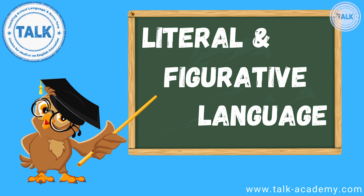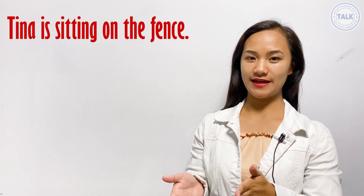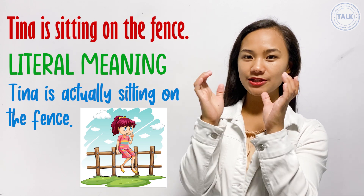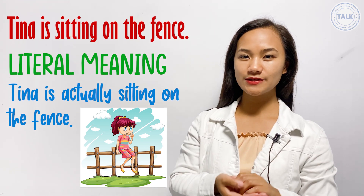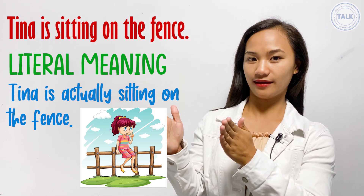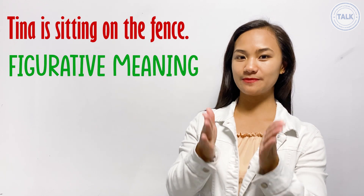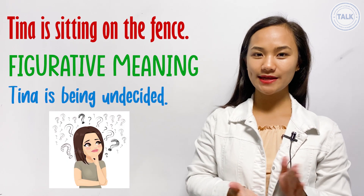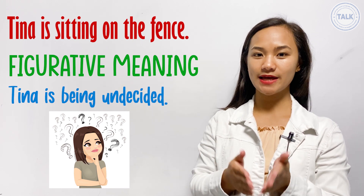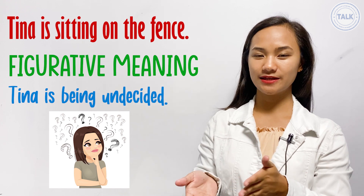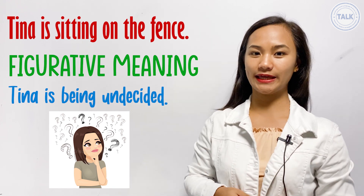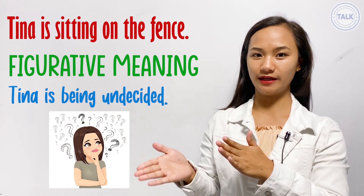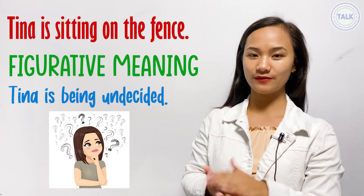Before we talk about figures of speech, let's understand first the difference between literal and figurative language. Let's take a look at this situation: Tina's sitting on the fence. Here's Tina and here's the fence, and she's actually sitting on the fence — this is the literal meaning. On the other hand, let's talk about Tina being undecided. If you ask her if she's in favor or against something, she's undecided — she can choose a side. This is figurative language.